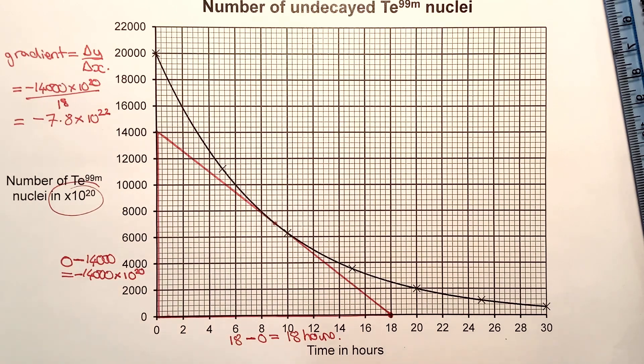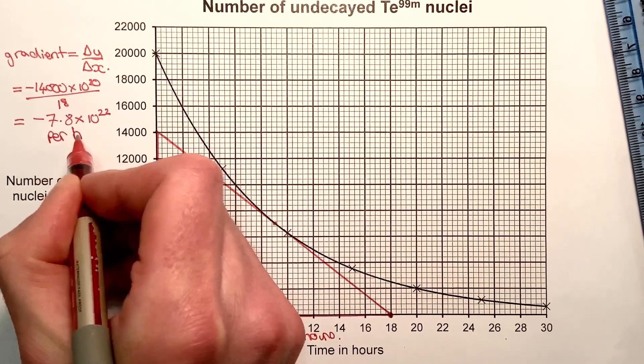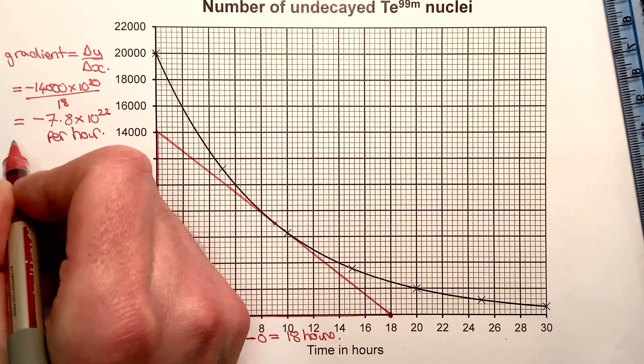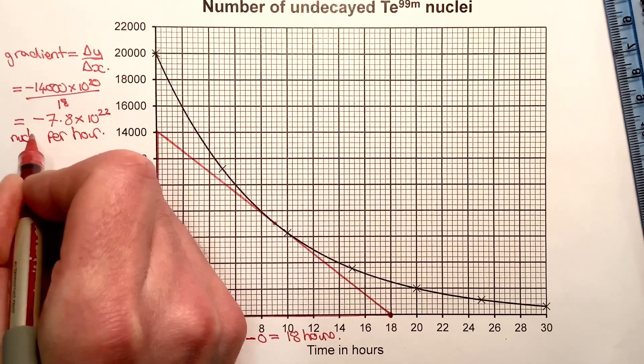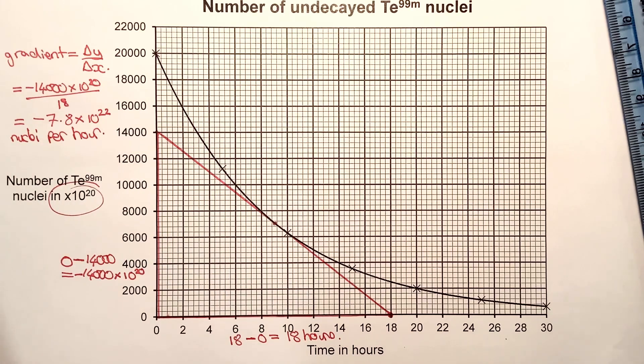I need to add that this is per hour, because this is the number of nuclei that decay per hour. So my units would be per hour or nuclei per hour.